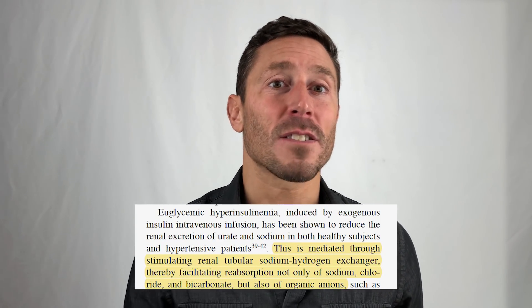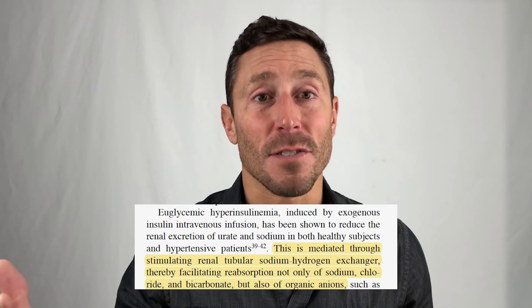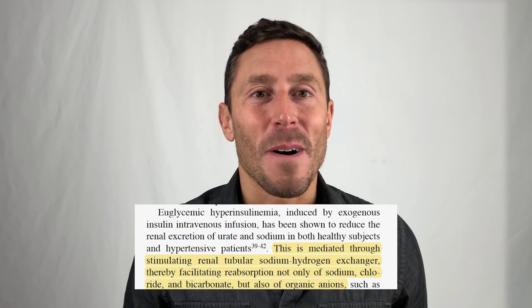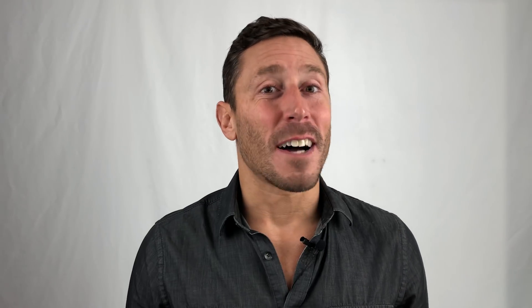Insulin resistance creates higher levels of insulin, and when insulin rises, the kidneys become less effective at excreting uric acid. Experiments where normal subjects were infused with insulin showed reduced uric acid excretion, and people with higher insulin levels show lower uric acid excretion. So rising insulin causes the kidneys to under-excrete uric acid — probably one of the major mechanisms behind uric acid accumulation and gout in insulin-resistant individuals.